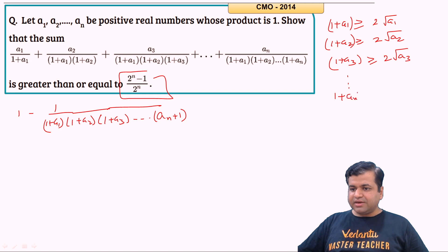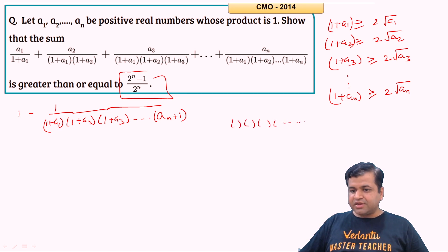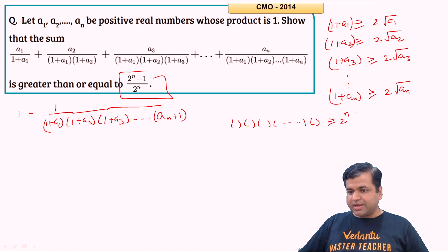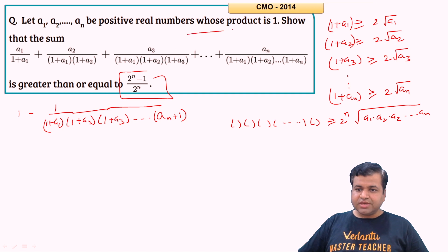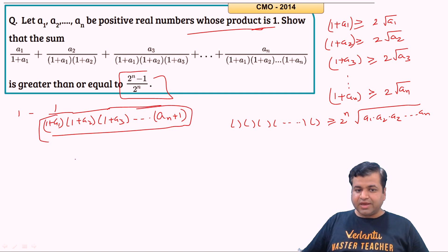(1+AN) ≥ 2√AN. Multiplying all these inequalities together, the product of these n factors is greater than or equal to 2^n times √(A1·A2···AN). Since the product of all A_k is given to be 1, the denominator (1+A1)···(1+AN) is greater than or equal to 2^n.